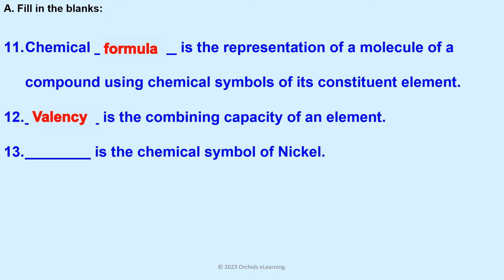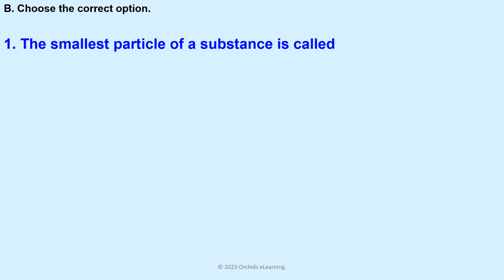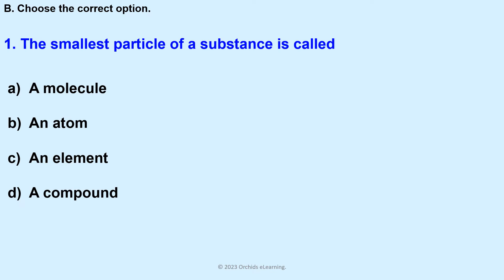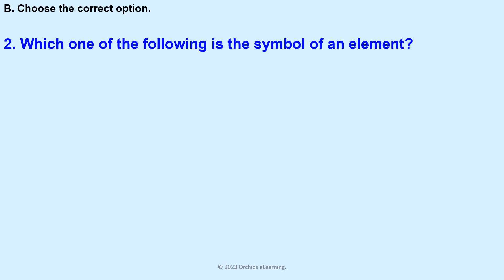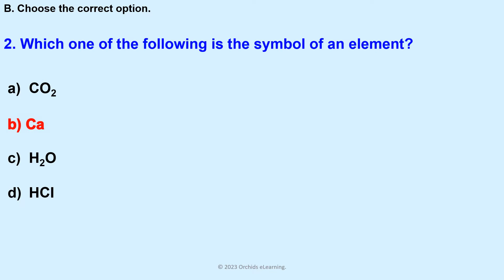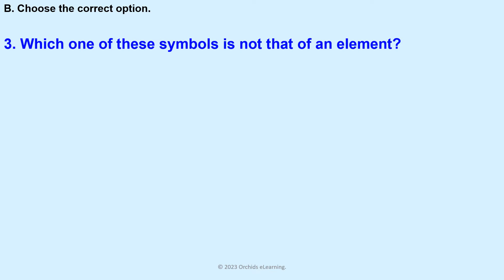The chemical symbol of nickel is Ni. Choose the correct option: The smallest particle of a substance is called (b) an atom. Which one of the following is the symbol of an element? Answer: b. Which one of these symbols is not that of an element? Answer: (d) CO2.